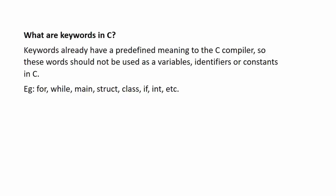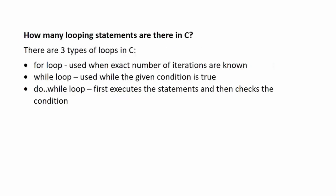Next question: what are keywords in C? Keywords already have a predefined meaning to the C compiler. These words which have a predefined meaning are known as keywords and they should not be used as variables, identifiers, or constants in C. For example, we have keywords like for — since for is a loop, we cannot declare a variable like 'int for' as that will confuse the compiler. Then we have while, main, struct, class, if, int, and so on. There are around 32 keywords in C.